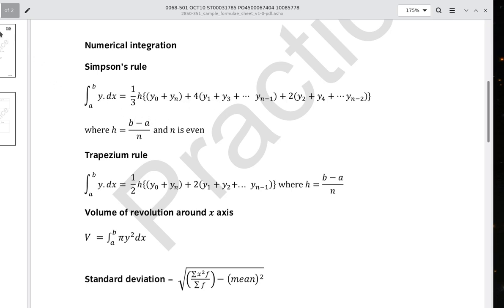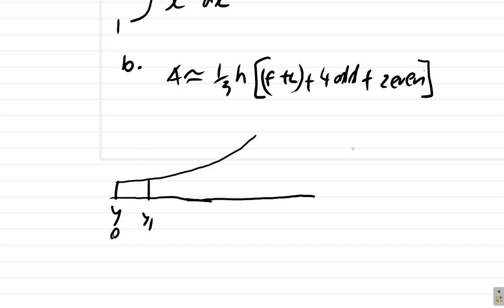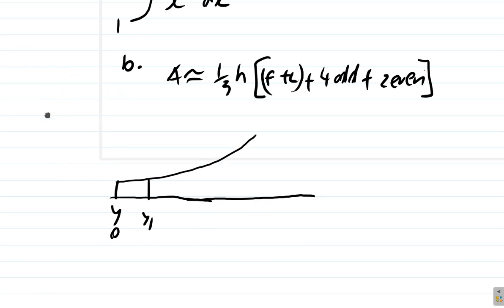H is B minus A over N. That means if you're integrating from A to B, H will be B minus A over N - upper value minus the lower value divided by the number of strips. So what is our H?